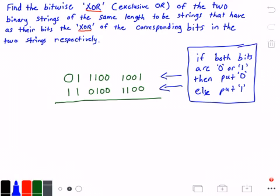So now let's see what our answer will be for these two strings. So for the first string we have 01 1100 1001, and then the string under it or the binary string under it is 11 0100 1100. All right,